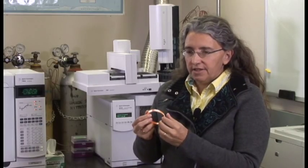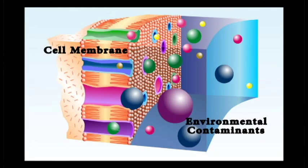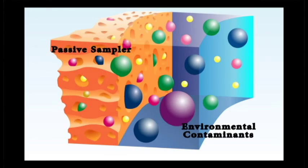How the passive sampling devices work is they're essentially mimicking a cell. In the same way that contaminants go into a cell, contaminants go into these passive sampling devices. They go in because this is not a hard surface, it's porous, so it is chemically very similar in many ways to the cell.